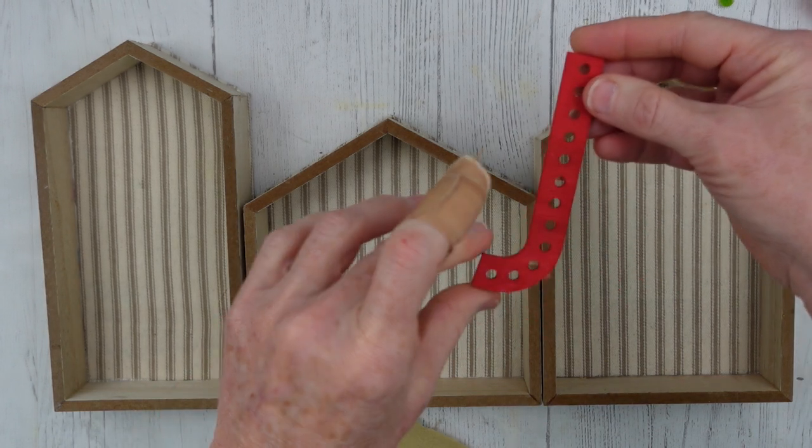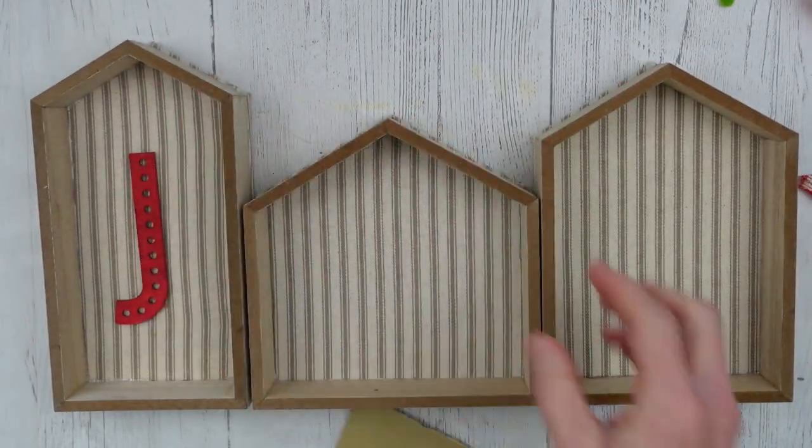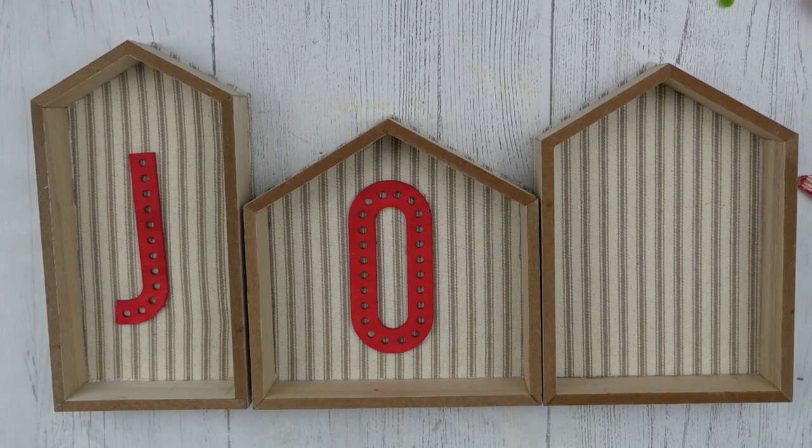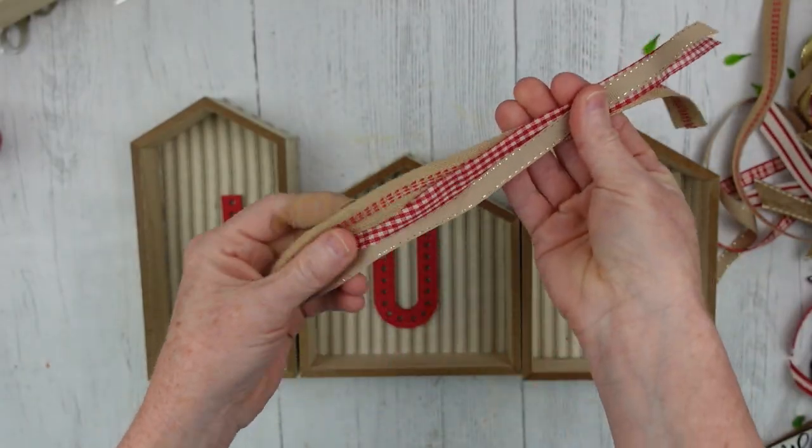So here we are with our three little houses, and here are our letters. You can put those in whatever order you want. You can do small to large or however you want to do it.